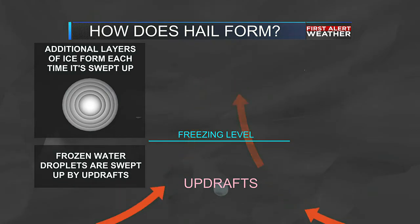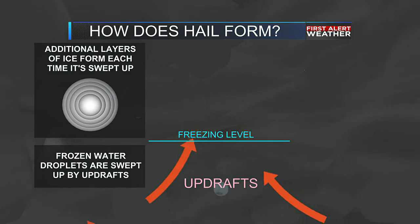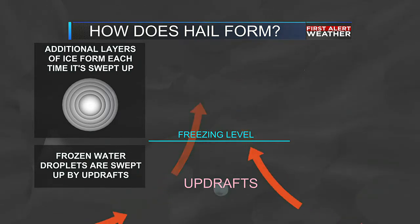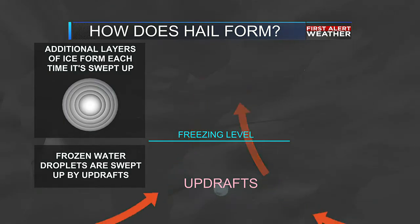A layer of ice forms on that water droplet, and then it drops back below the freezing level and repeats that process. It's basically a cycle — every time that water droplet pushes back up through the cloud and through that freezing layer, it develops another layer of ice. So if you were to take a hailstone and cut it in half, you would actually see rings, kind of like when you cut a tree stump and see the rings of the tree. Each ring is a different layer of ice, and that tells you how many times that water droplet moved up and down within that thunderstorm.